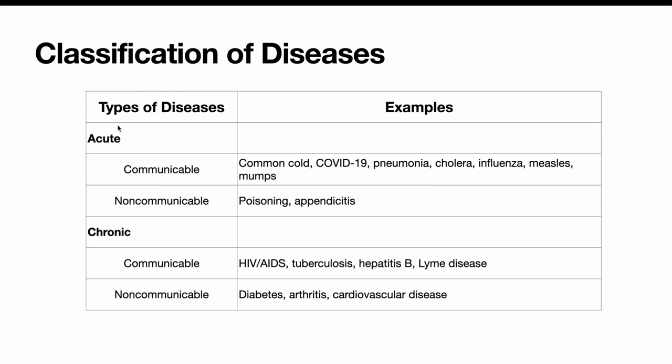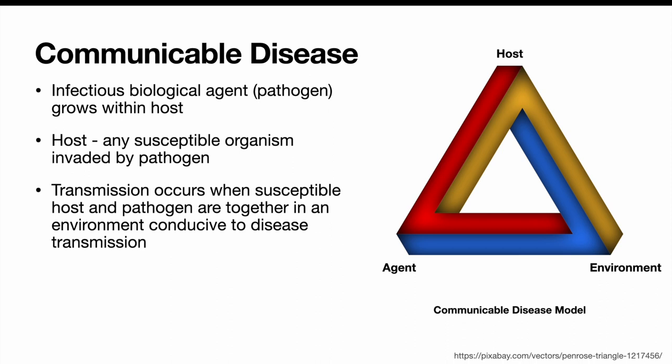Acute diseases can also be non-communicable, such as poisoning or appendicitis. Chronic communicable diseases include HIV/AIDS, tuberculosis, hepatitis B, and Lyme disease. We can also have chronic non-communicable diseases — diseases that last a long time but are non-communicable — like diabetes, arthritis, and cardiovascular disease.